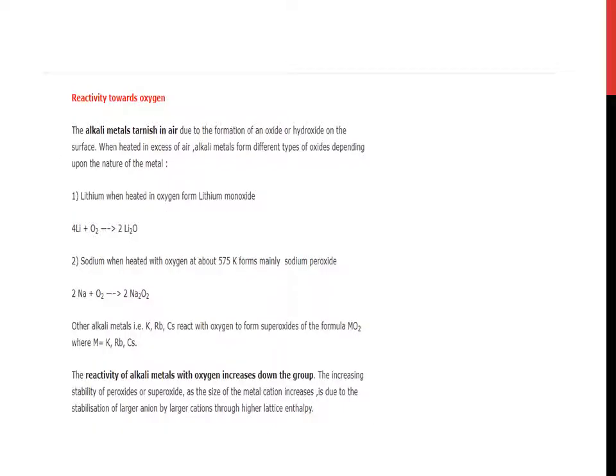Reactivity towards oxygen. The alkali metals tarnish in air due to the formation of an oxide or hydroxide on the surface. When heated in excess of air, alkali metals form different types of oxides depending upon the nature. Number one: lithium when heated in oxygen forms lithium monoxide.